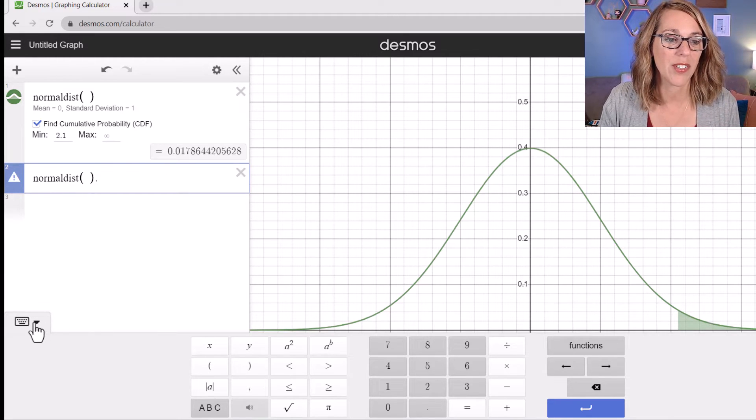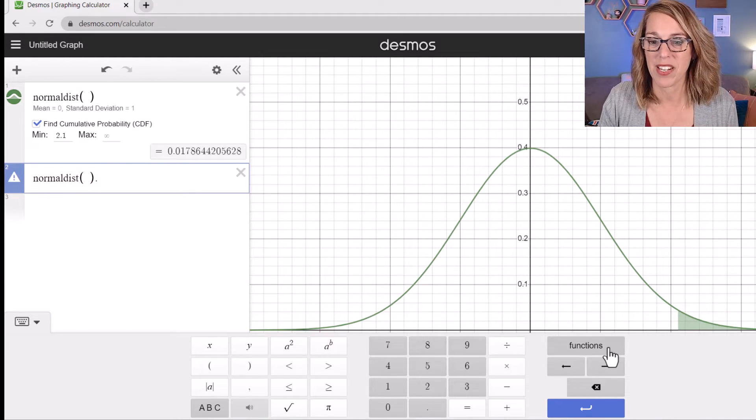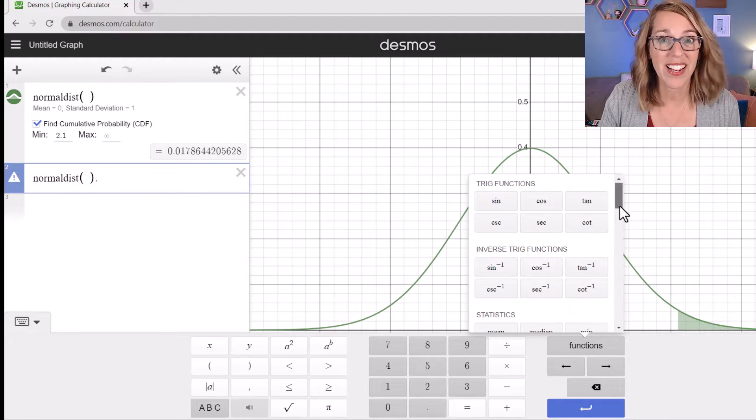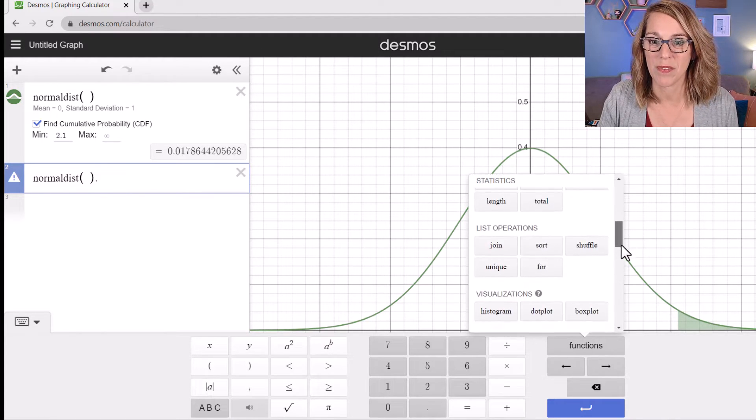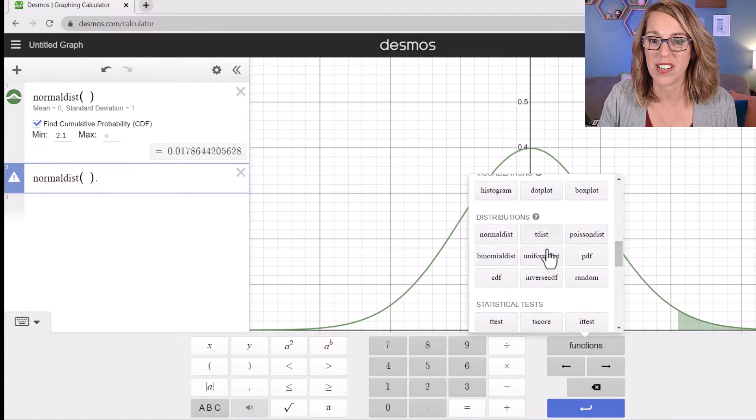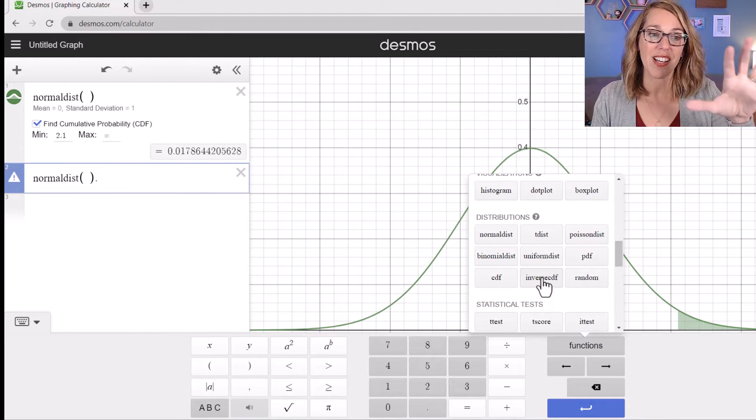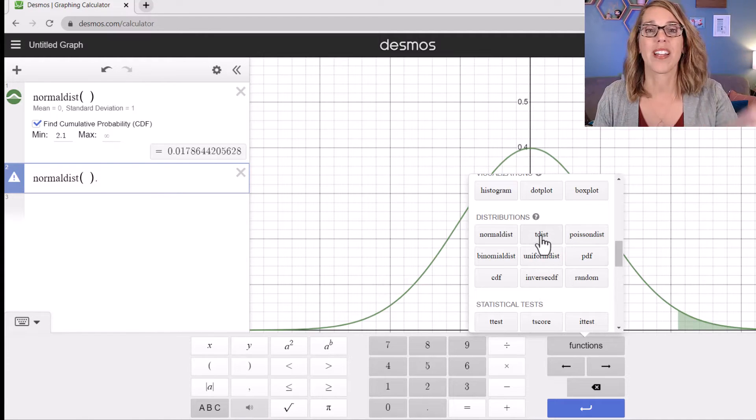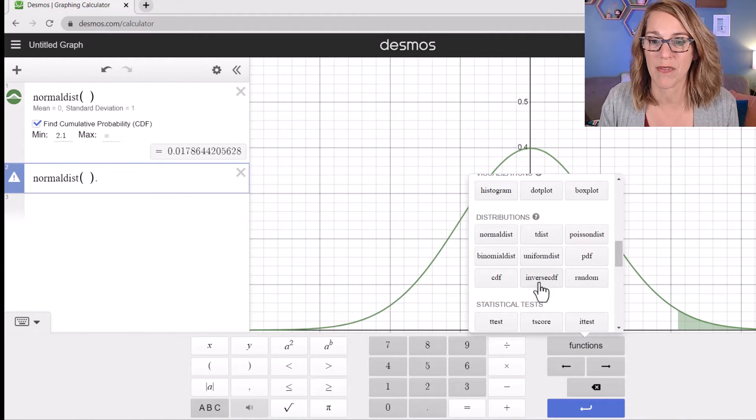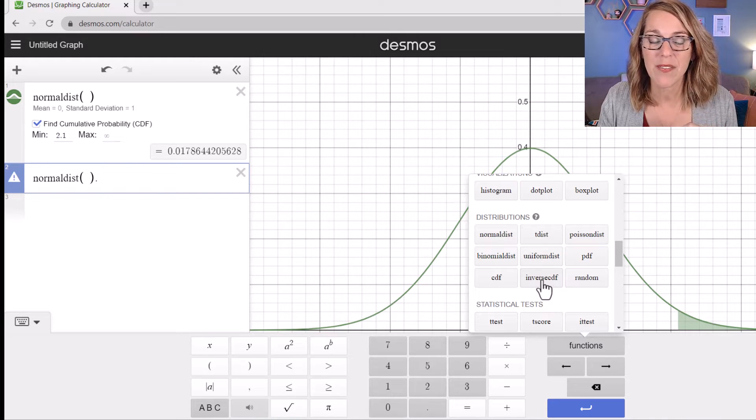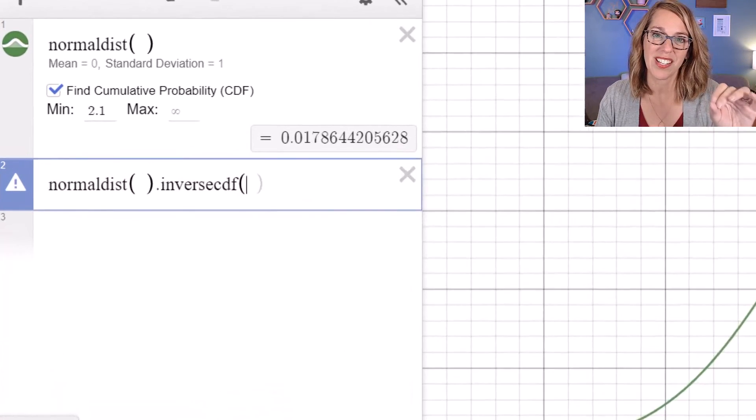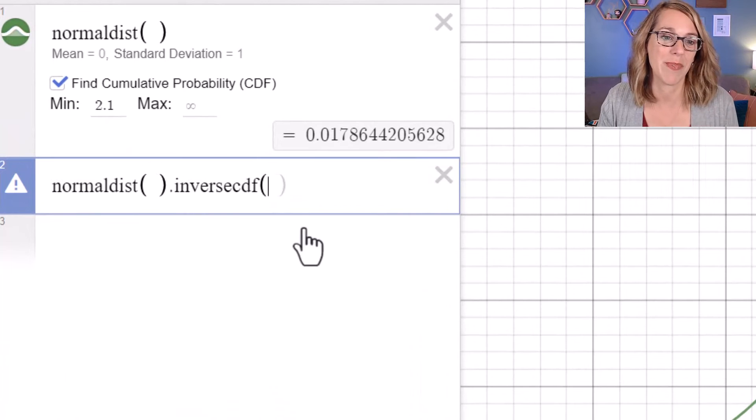I'm going to get to the inverse function through my keypad. I'm going to click on functions, scroll back down to that distribution menu. My distributions are right here. And I'm going to click on this inverse CDF. It's working on my normal dist, but it will work on any of the other distributions that Desmos offers. I'm going to click on inverse CDF and it puts it there right after my period.